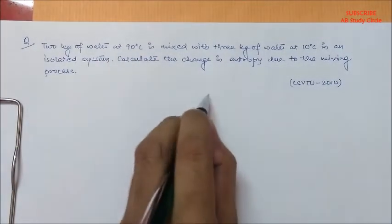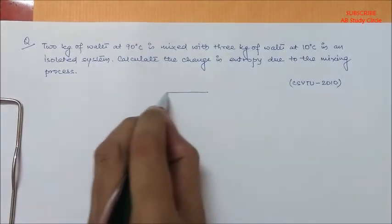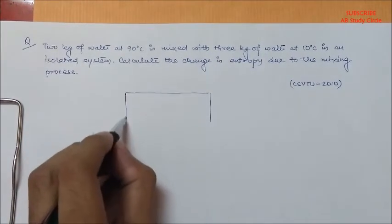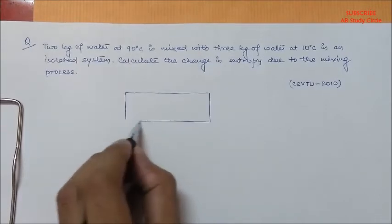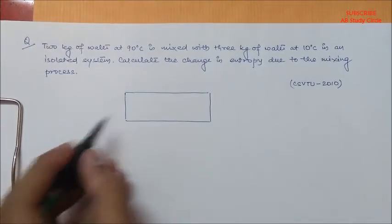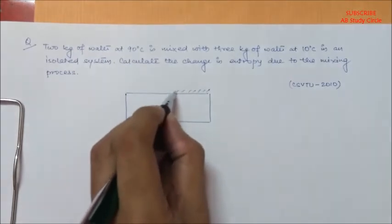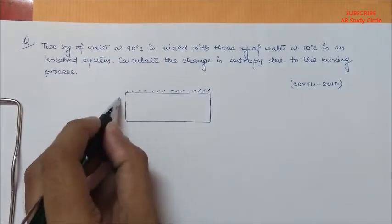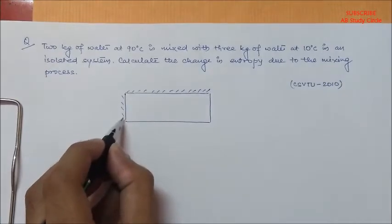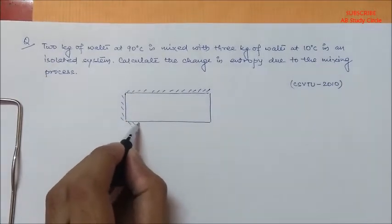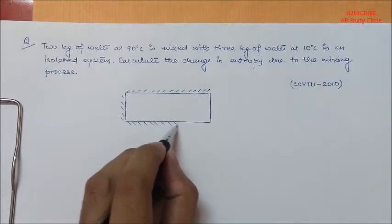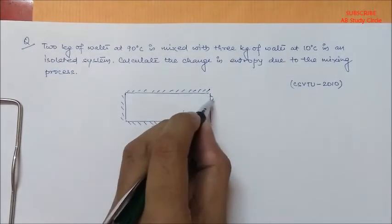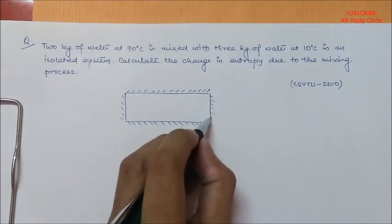So, let's draw a block diagram according to the question. See, this is your mixing chamber and it's isolated. That means neither any heat is being added to this system or any heat being lost from this system.